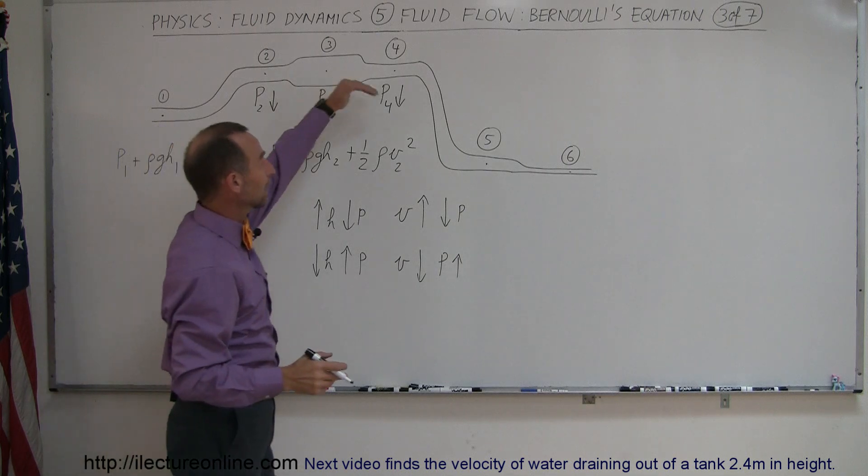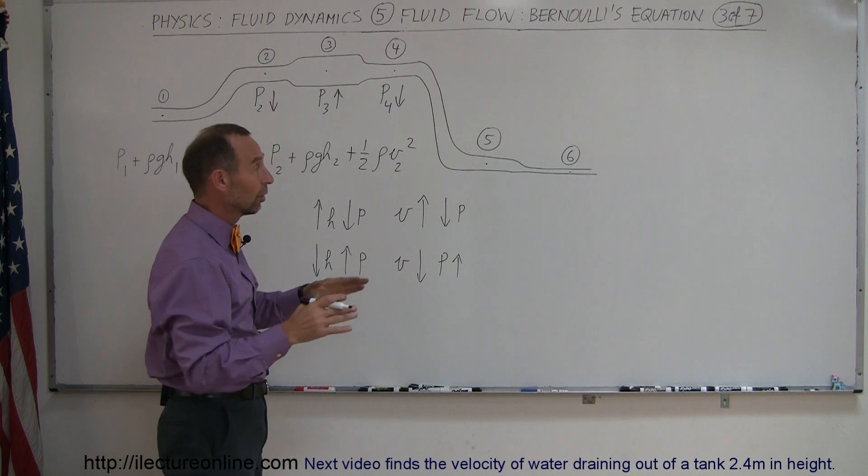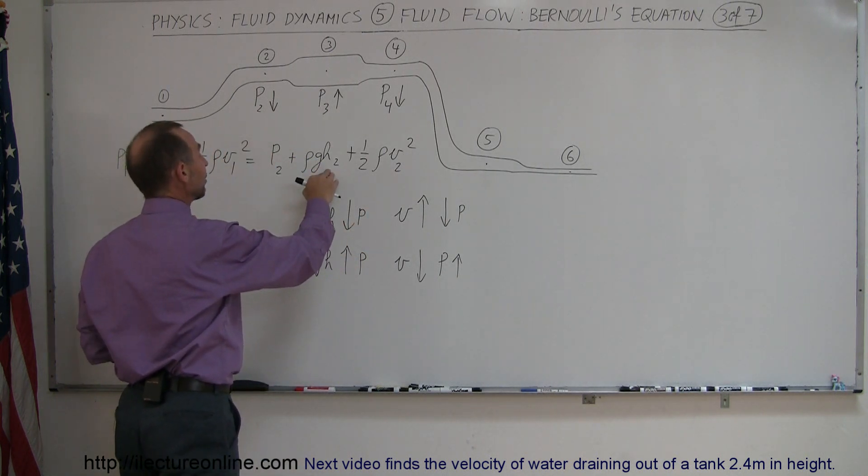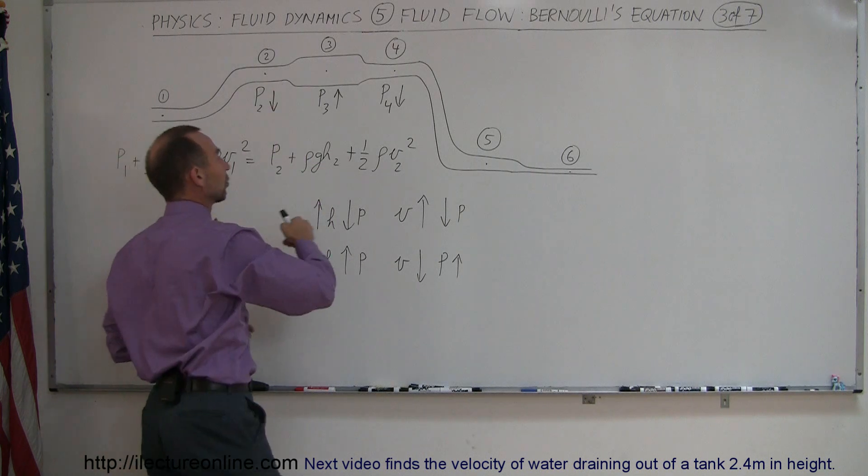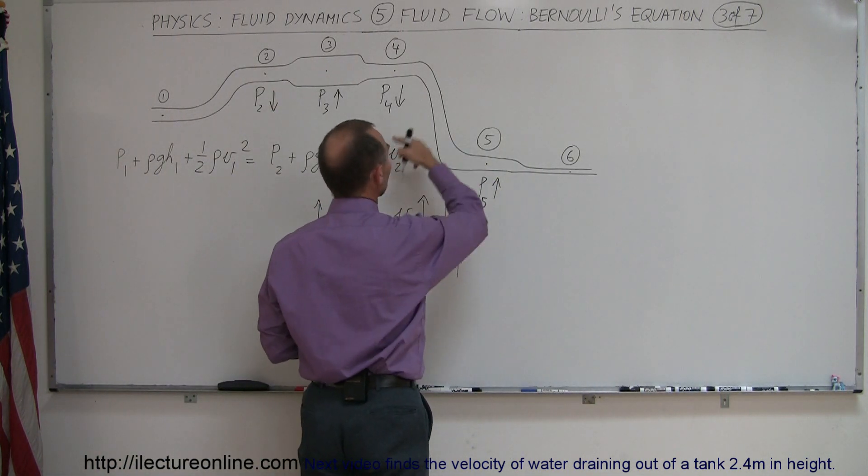Now we come down here and we lose elevation, we get to point 5. With point 5, we're at low elevation, so that means pressure has to go up. If h goes down, then pressure goes up. So pressure must go up relative to point 4.